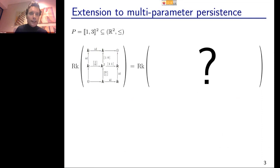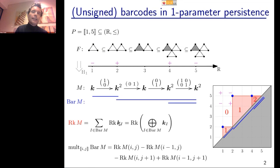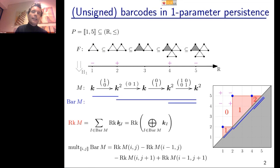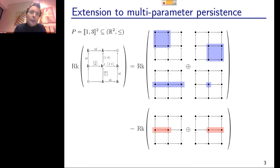This is a counter-example showing you cannot always decompose the rank invariant as positive sums of rank invariants of interval modules. Nonetheless, decompositions exist if you allow for negative weights in the sum. Here are two examples of such decompositions for this module — one is not minimal, and one is minimal in a certain sense.